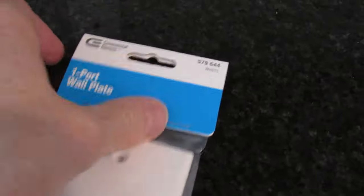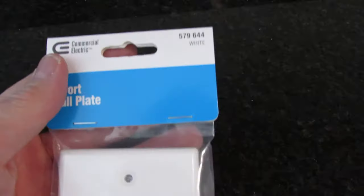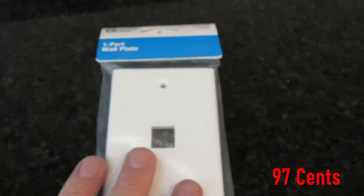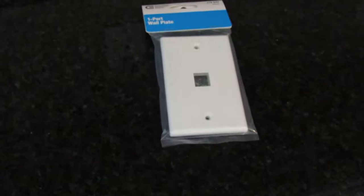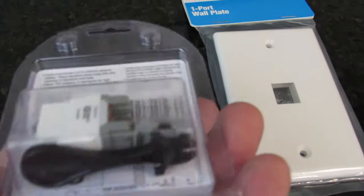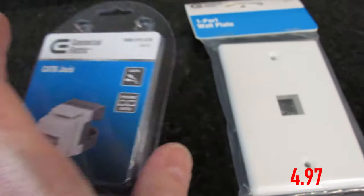Okay, you'll need two parts to complete this conversion. First is a one port wall plate. I paid about a dollar for it, it's white. Second part you'll need is a Cat6 wall jack plug. It's also white and I paid about five dollars for this, and you can find both these parts at Home Depot or Lowe's.